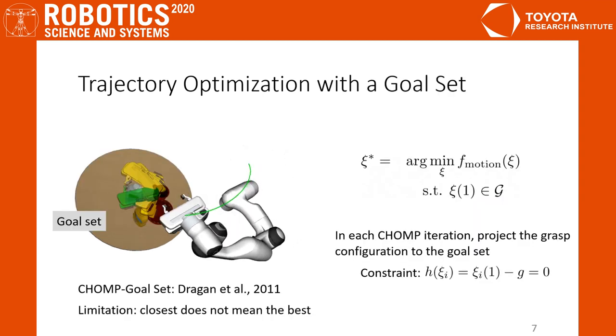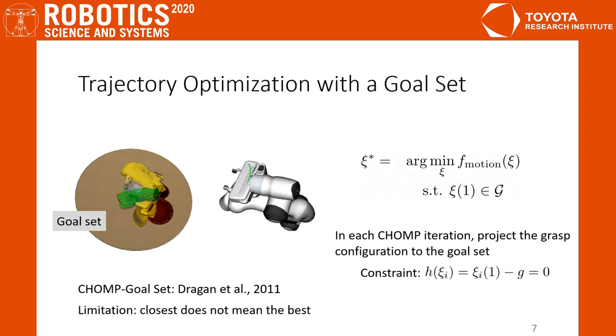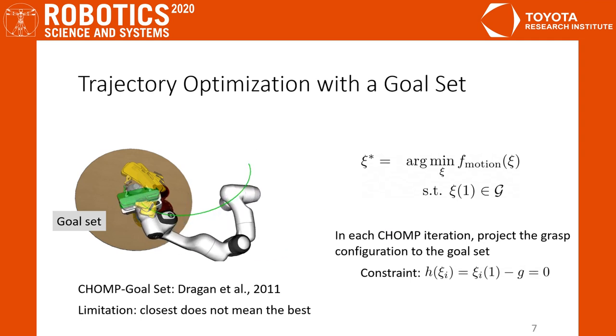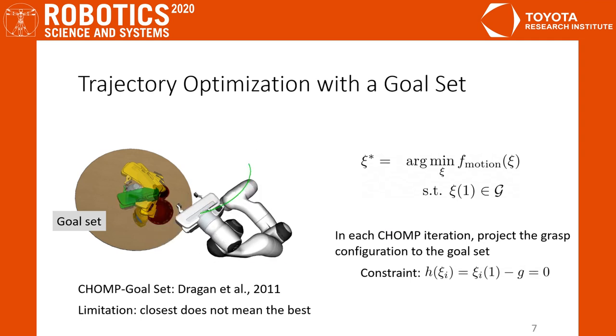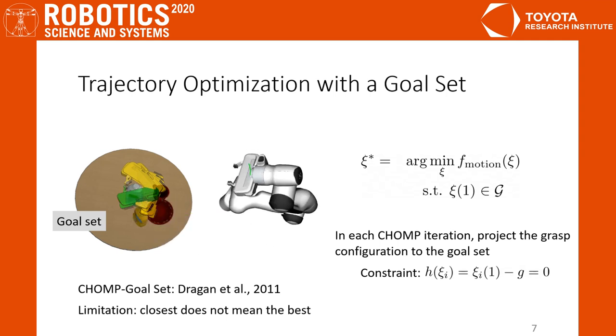The constrained version of CHOMP uses the Lagrangian formulation and modifies the update to be a projected gradient step. Since goal set projection uses the closest grasp as target, this can often be simplistic.